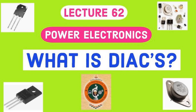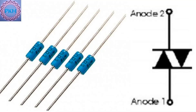Application 6 — snubberless TRIAC circuits: DIACs are often used in snubberless TRIAC circuits. A snubber circuit is typically required to protect a TRIAC from high voltage transients and ensure proper switching. However, in snubberless designs, the DIAC assists in triggering the TRIAC more precisely, reducing the need for a snubber circuit and simplifying the design. These circuits are used in smaller, more cost-effective designs for low to medium power AC control applications, such as home appliances and power tools.